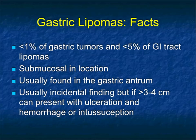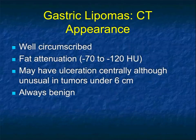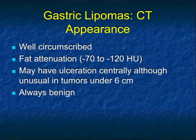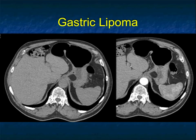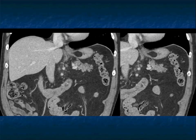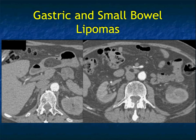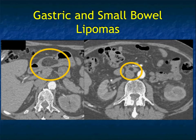Lipomas are rare in the stomach. When they get large, they can bleed or intussuscept. There is submucosal location, usually found in the gastric antrum, and most typically an incidental finding unless they're really large. Lipomas — be it small bowel, large bowel, or stomach — are usually easy to recognize: well-circumscribed, fat attenuation around minus 100 Hounsfield units. Ulcerations typically only occur when the lesions are large. Here's a nice example of a 3-centimeter lipoma in the gastric fundus with classic fat attenuation, as well as a mass in the antrum and duodenum — a nice example of small bowel and gastric lipomas.